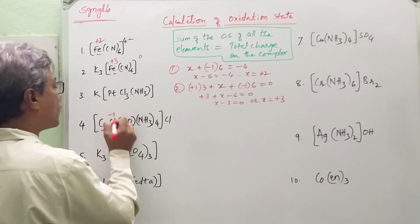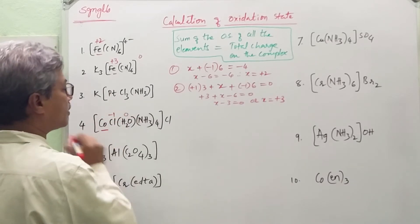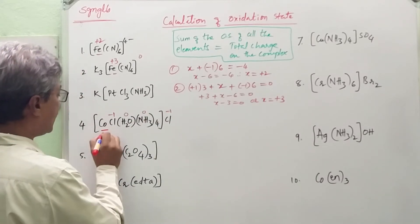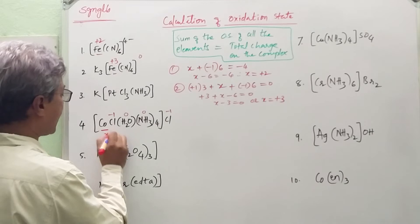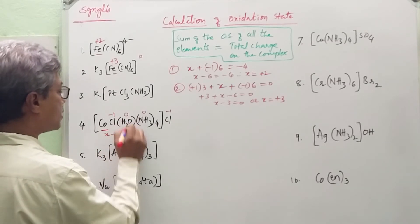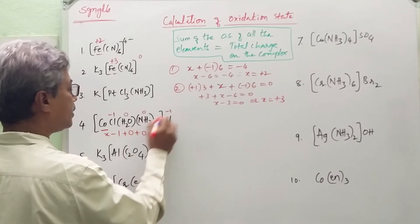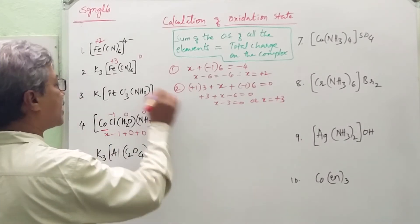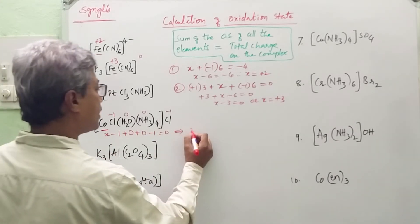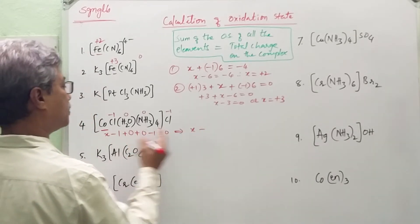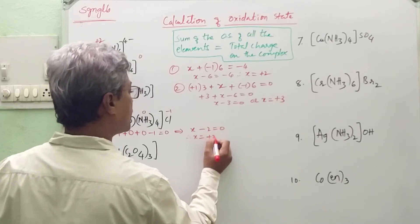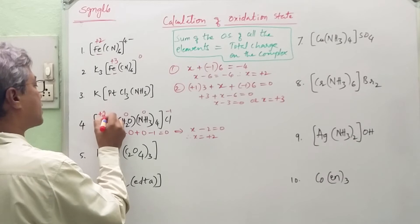In this example, Cl has charge minus 1, water is 0, and ammonia is 0. Let the metal oxidation state be x. So: x + (−1) + (0) + (0) + (−1) = 0. This implies x − 2 = 0, therefore x = +2. The metal is in the +2 oxidation state.